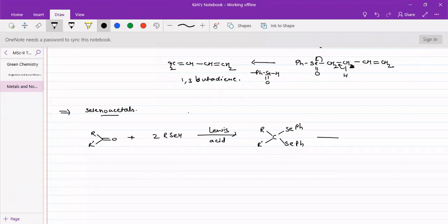When subjected to basic conditions like n-butyl lithium, these are stable to acidic conditions but in highly basic conditions they will lose one of the selenides to form a carbanion.